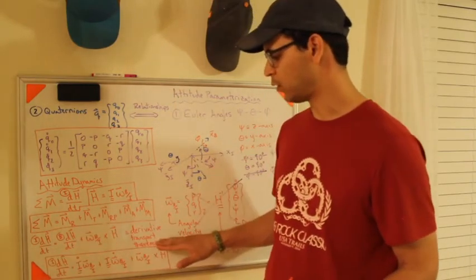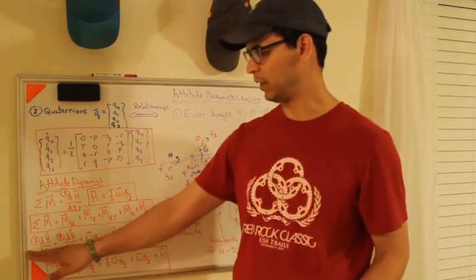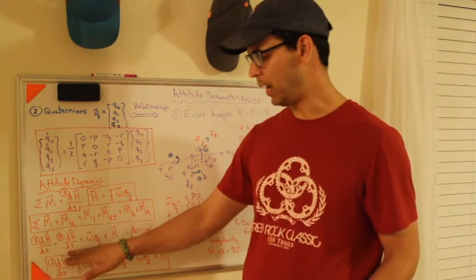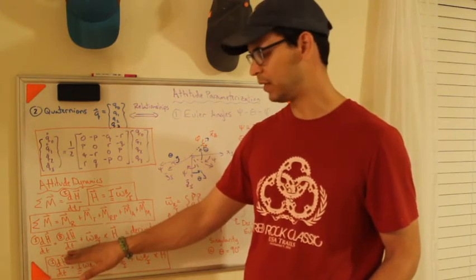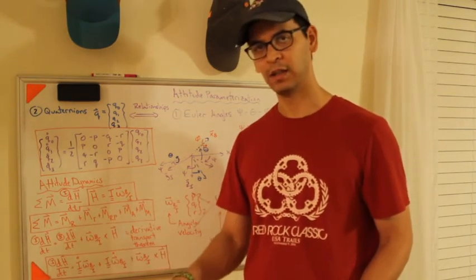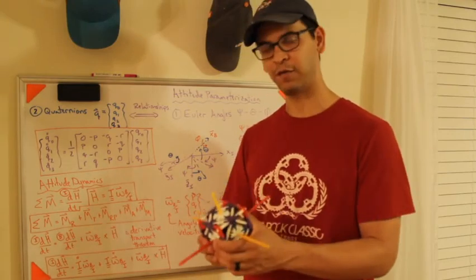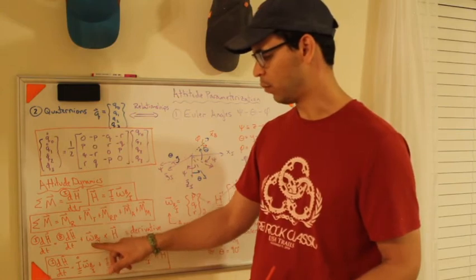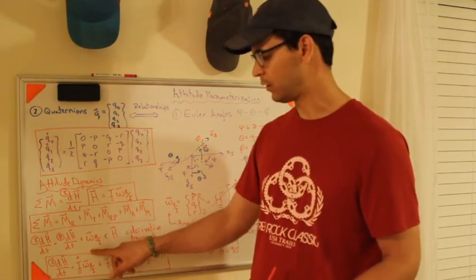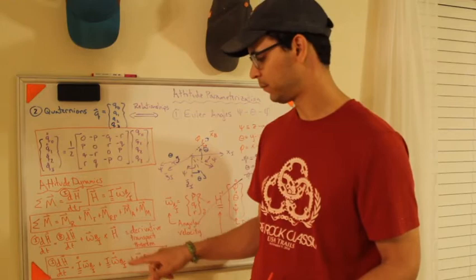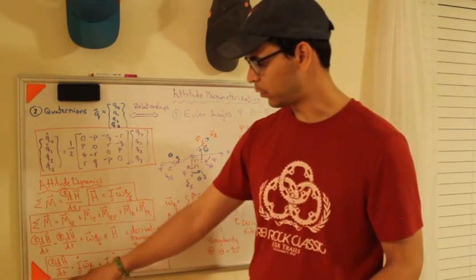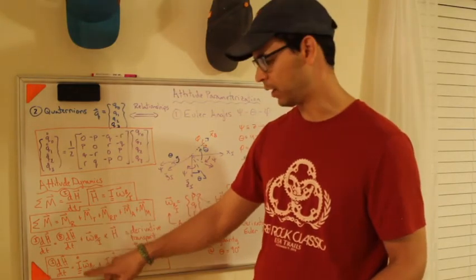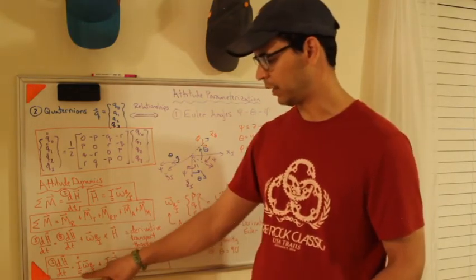So when you take your derivative, you actually have to use what's called the derivative transport theorem, which says if you want to take an inertial frame derivative, you have to take a body frame derivative, which says take the derivative assuming the body frame is inertial, but add on this extra term omega cross h. And so you have to add this term here on the back end. And so if you bring this down one more step, let's assume that the angular momentum vector is in the body frame. Well, then I just need to do the chain rule and say, OK,